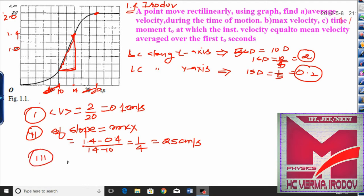In the third part of the question, the time moment T_0 at which the instantaneous velocity becomes equal to average velocity. It means V instantaneous is equivalent to V average.